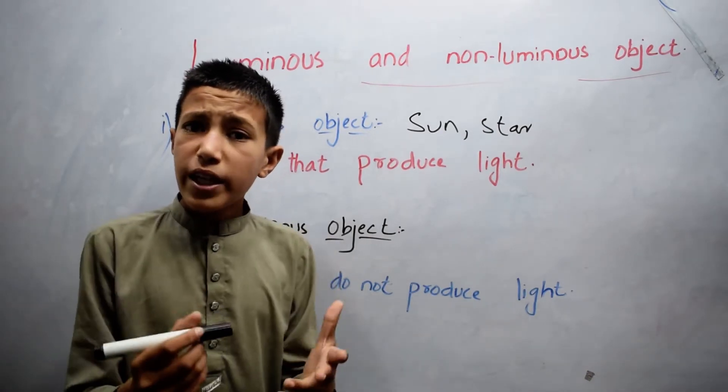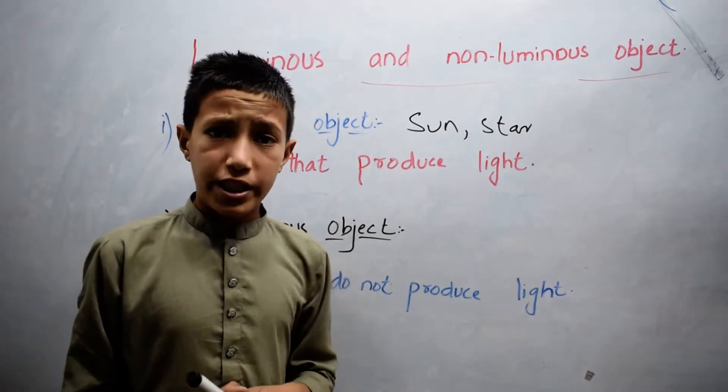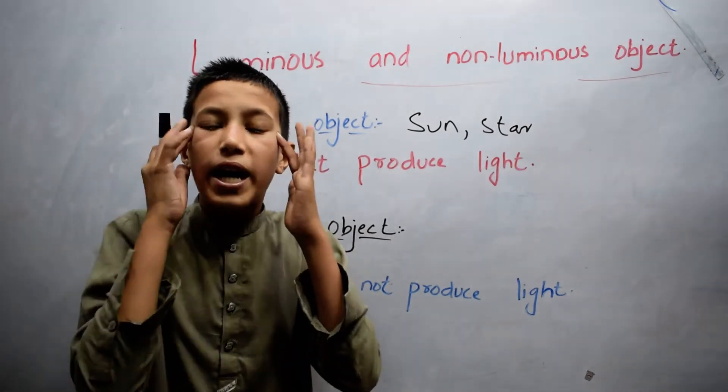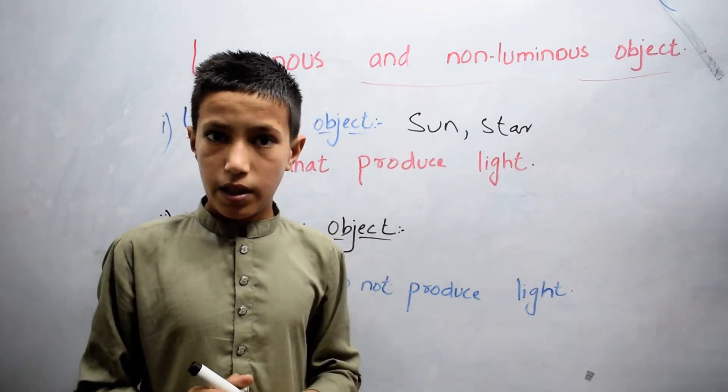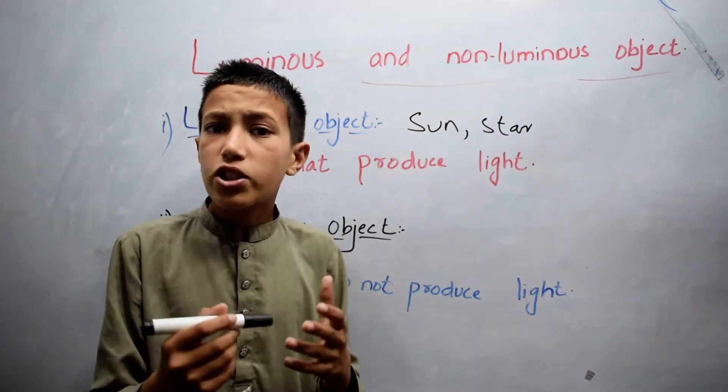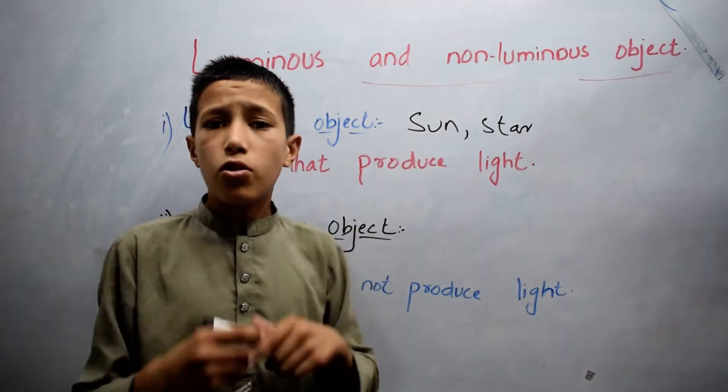We can see luminous objects because their light enters our eyes directly. Electric bulb, candle, and torchlight are all luminous objects.